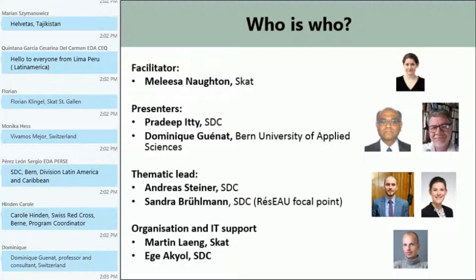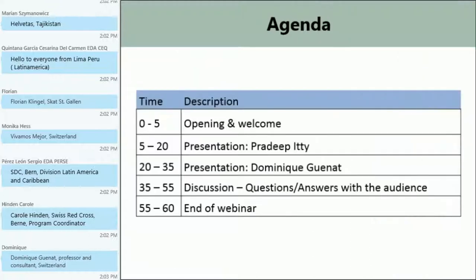Martin Lang and Ege Akyol from SCAT and SDC respectively are supporting us with the technical facilitation of this webinar. This is the agenda for the webinar. It will last one hour, and we will start with the presentation from Pradeep Itty. Mr. Pradeep Itty is Head of Quality Assurance and Poverty Reduction at the Swiss Agency for Development Corporation, and he holds a doctorate in agricultural economics from the Swiss Federal Institute of Technology in Zurich.